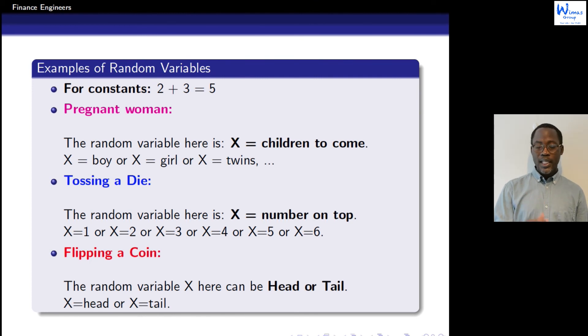These three examples, either a pregnant woman, we have random variables that varies. Either we can consider just two cases: boy or girl, or maybe twins. We can consider a coin, we have also two possibilities. Or a die, we have six possibilities. So all these answers, we see they are changing randomly, they vary without any fixed plan.